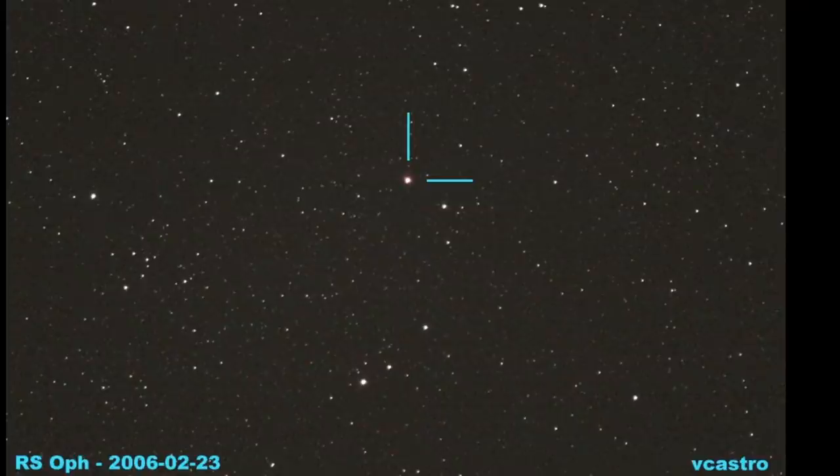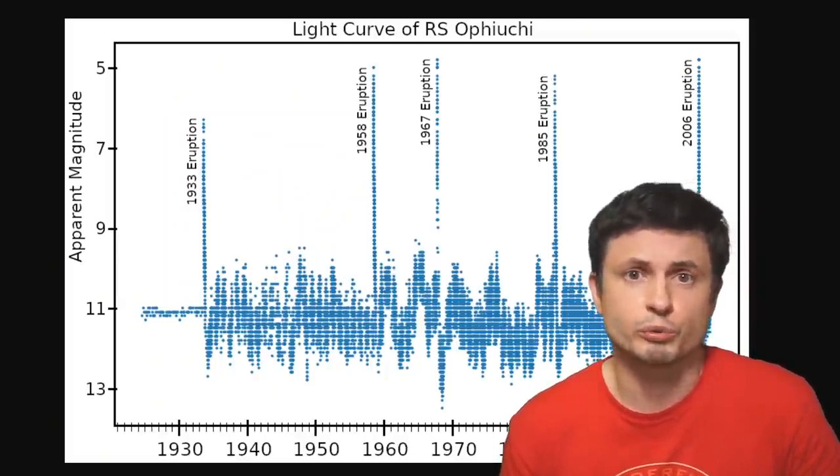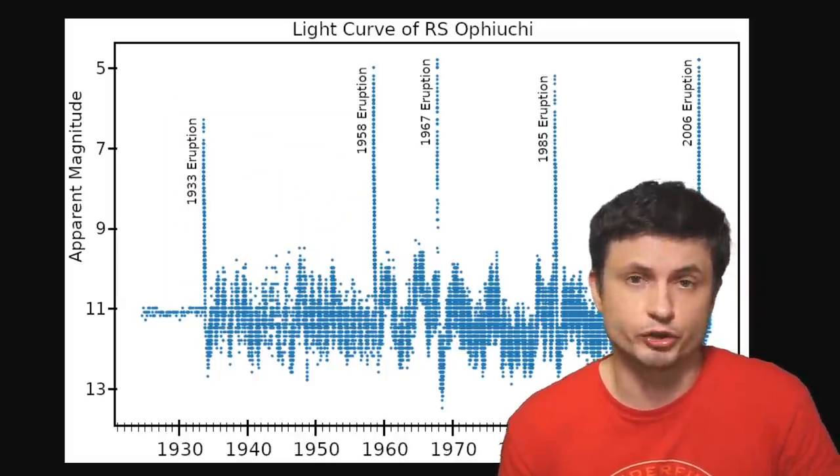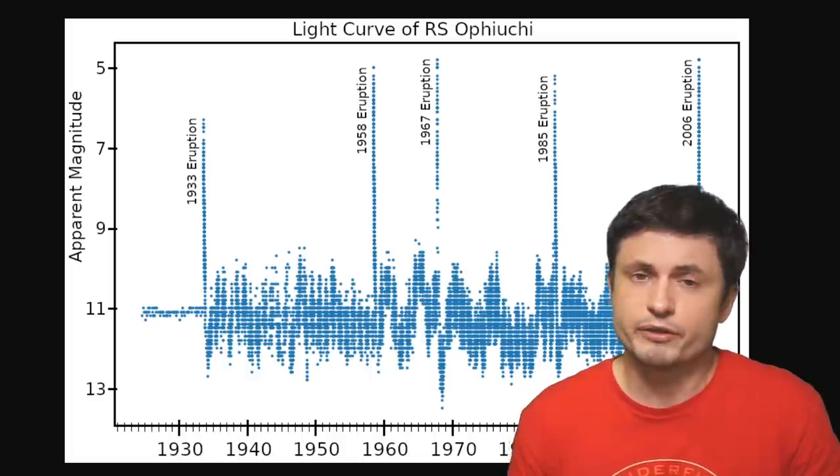Here's the last time this star went nova. This was back in 2006. And this particular recurrent nova is probably the most well-known, simply because it's done it so many times. Also because, as you can see from this image, it's relatively regular. On average, happening every 15 or so years.